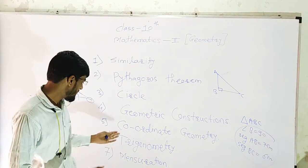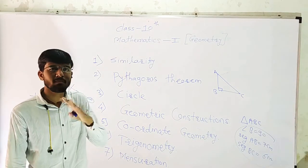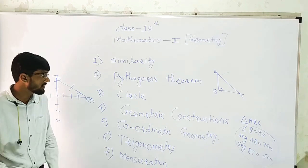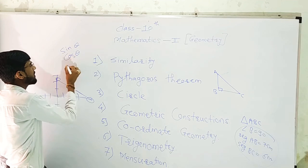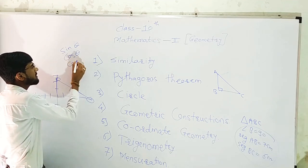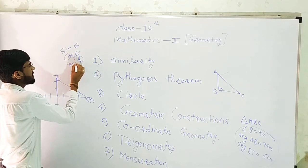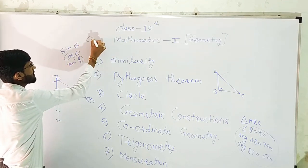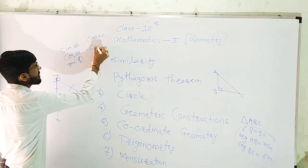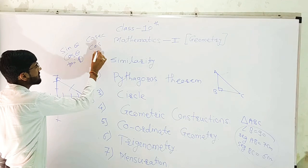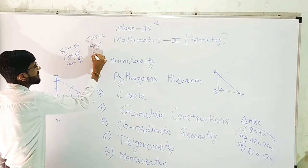And now we need trigonometry. We are going to cover sine, cosine, and cotangent. Topics include sin kodi, cos kodi, cot kodi, and related identities — cos, cot, and cot.